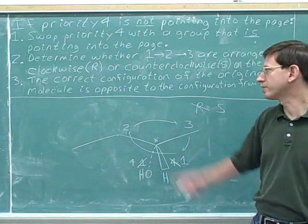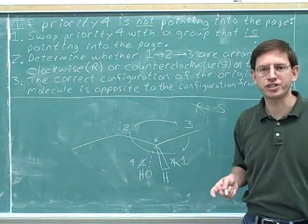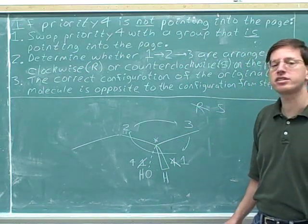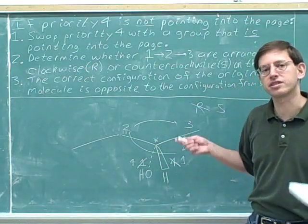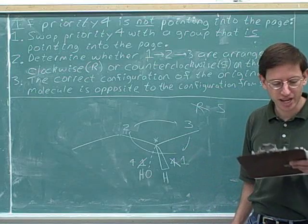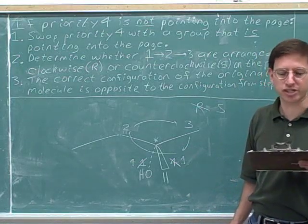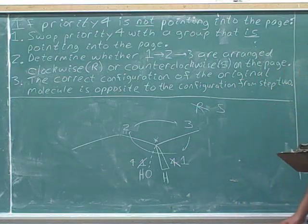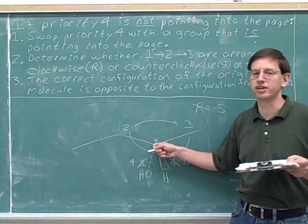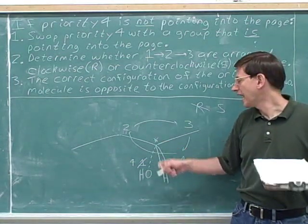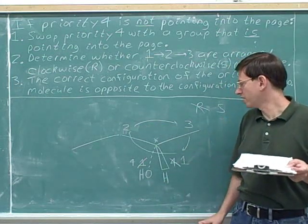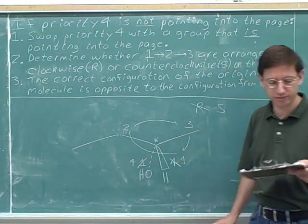We did a couple of examples of how to use this method for Fischer projections, but now you can see that the method works just as well for non-Fischer projections. This method works for both Fischer projections and non-Fischer projections. Note again the importance of drawing in the hidden hydrogen on the stereocenter, and also drawing in hidden hydrogens on the attached atoms if you have trouble finding the priorities.